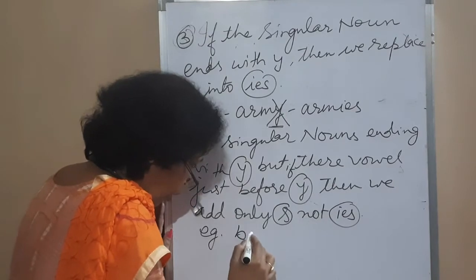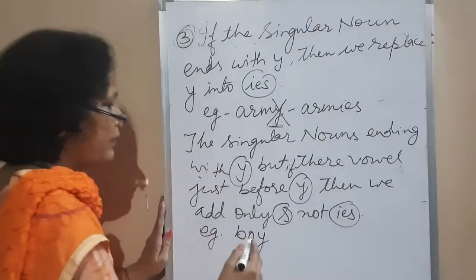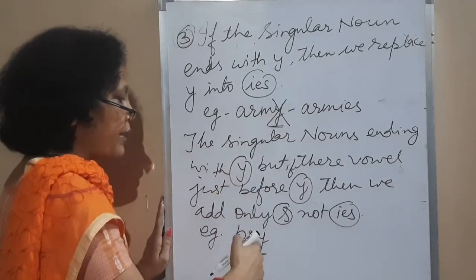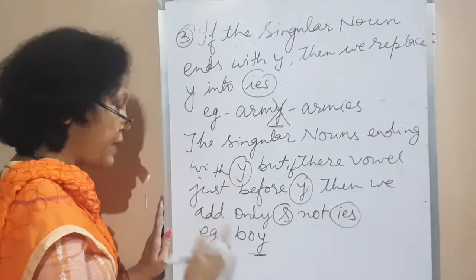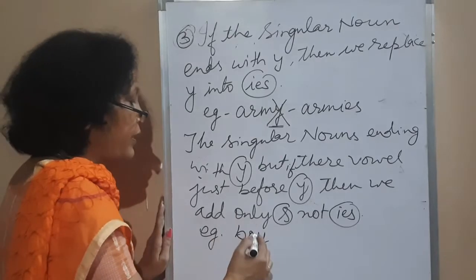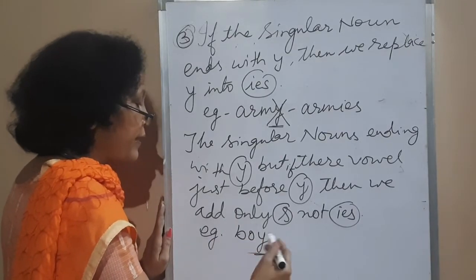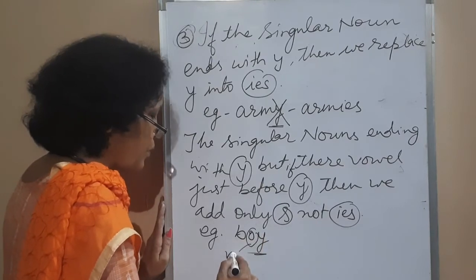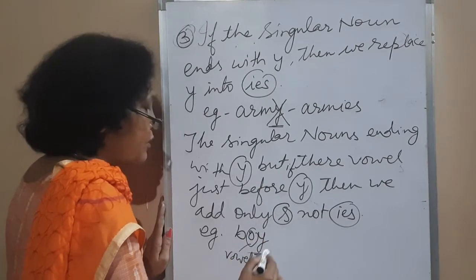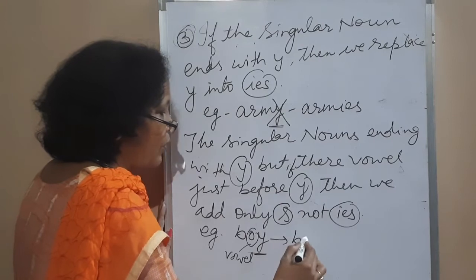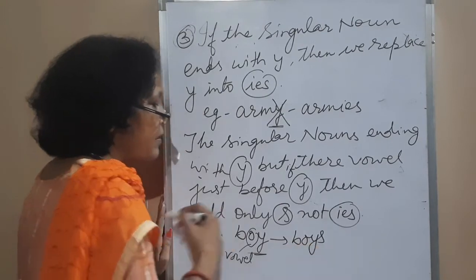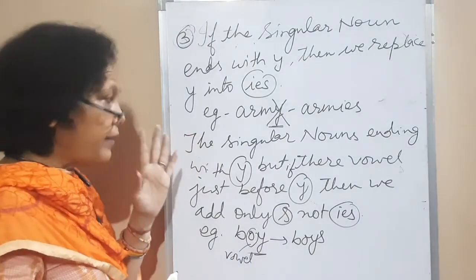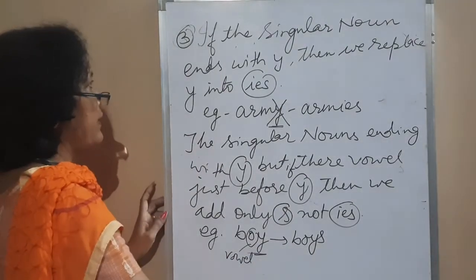For example, the word boy — according to the rule we might write B-O-I-E-S, but in English we write boys because there is a vowel O just before Y. So we add only S, and the plural of boy is boys.